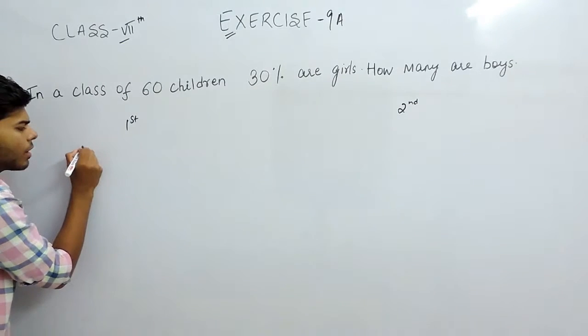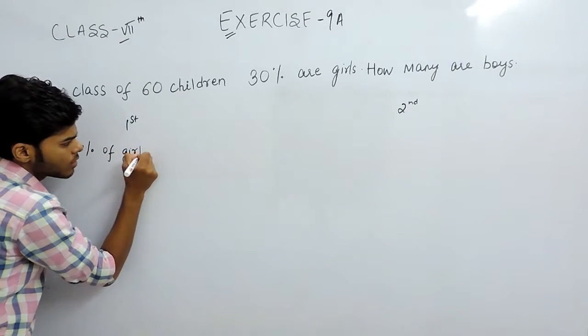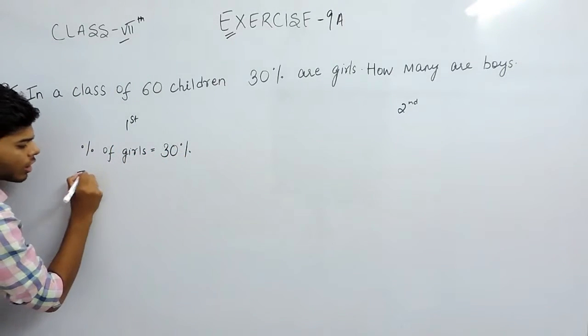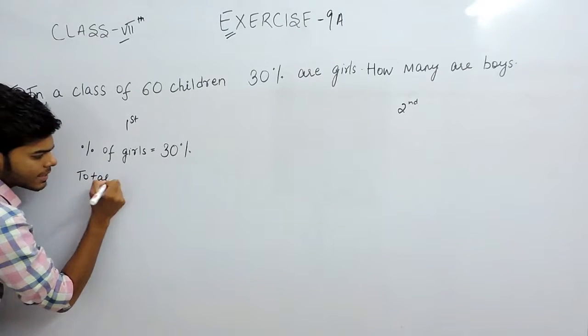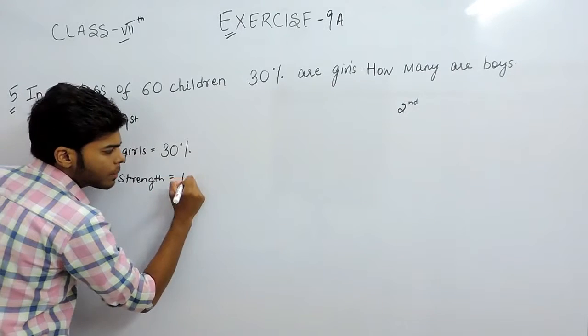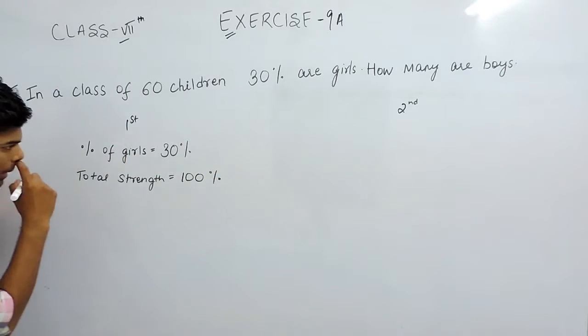We are given that the percentage of girls equals 30%. The total strength, meaning the total number of children, will be 100% because we take the base as 100%.